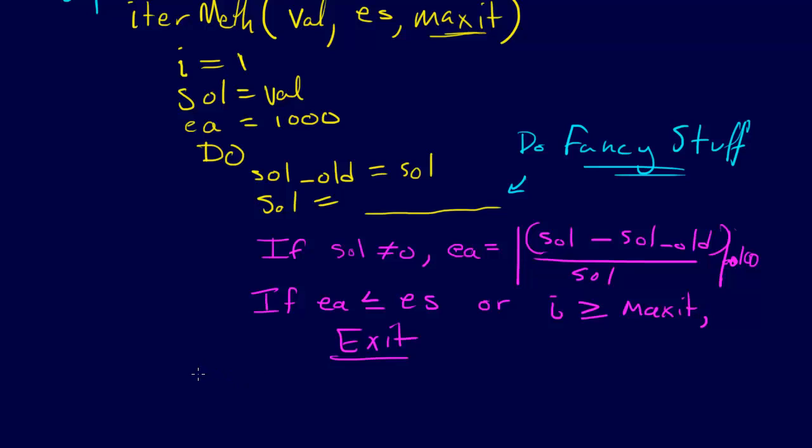Okay. And then, so then we have this, we just finish this up. That was the meat of it, end do, and then, we output the solution. Output is, and our output is the solution. Okay. And we have our value, hooray, we're done.